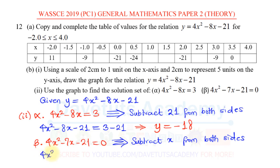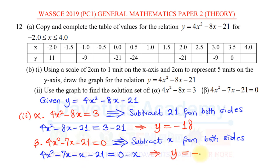So I subtract x from both sides: 4x² - 7x - x - 21 = 0 - x, giving 4x² - 8x - 21 = -x. But 4x² - 8x - 21 is y, so I can say y = -x. These are the two new graphs — y = -18 and y = -x — that we need to plot on the same graph of y = 4x² - 8x - 21. The points of intersection will be the solutions.